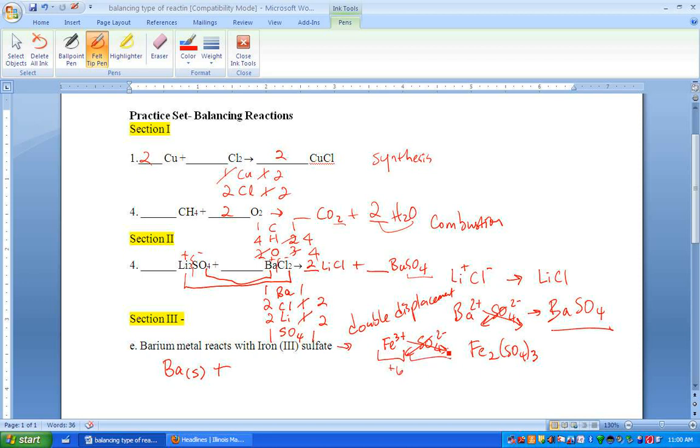If you're not familiar with the criss-cross method all we're trying to do is make the whole iron side plus 6, make the whole sulfate side minus 6. Therefore we need 2 iron and 3 sulfate. That's what we're doing here. So that's one of your reactants.